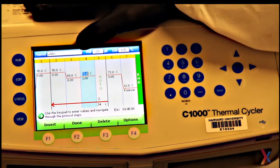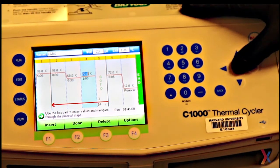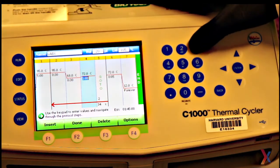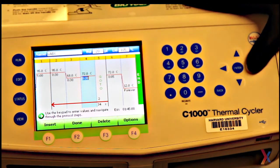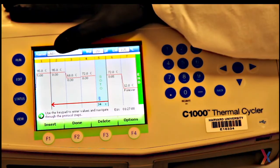And then the last step of the cycle is extension. I want this at 72 Celsius for 30 seconds. Then this cycle will repeat 34 times.